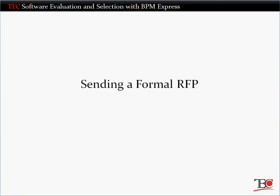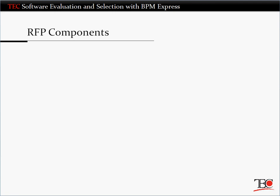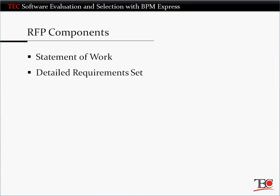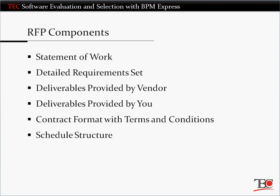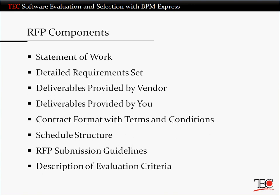Your in-depth evaluation begins by issuing a Formal Request for Proposal, or RFP. TEC can help you develop a comprehensive RFP document that includes the structure and required inputs for a detailed statement of work, including references and demonstration scripts, a complete list of your requirements to be revalidated by the vendors, a list of deliverables the vendor must provide, a list of deliverables you must provide to support the project, a contract format, legal terms and conditions, relevant procurement information, the structure and required inputs for a full project and implementation schedule, submission guidelines for the RFP, and a description of the criteria you'll use to evaluate the vendors.